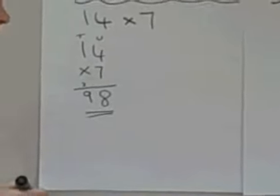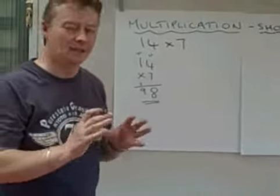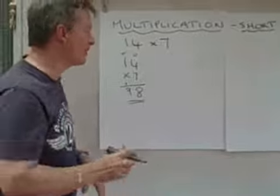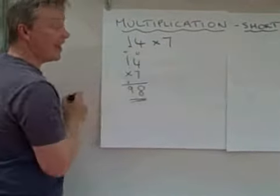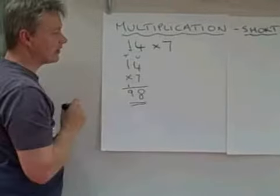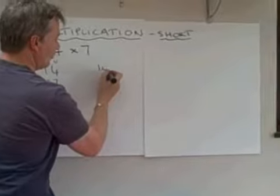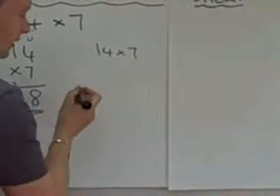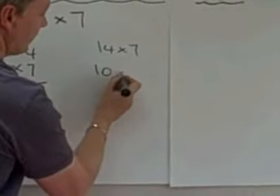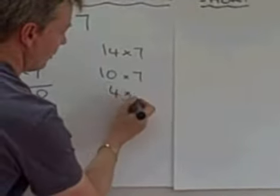There is another method we can do, which doesn't rely on you knowing your times tables quite as much, but still you need to practice them. What we do is we recognize that this is tens and these are units. And I'm going to write it out again slightly differently as 14 times 7 can be rewritten as 10 times 7 and 4 times 7.